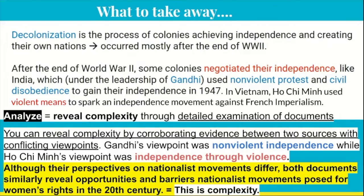If you find opportunities and barriers in Document 1 and opportunities and barriers in Document 2, you've revealed complexity. You can go deeper by corroborating evidence between two sources with conflicting viewpoints. For example: Gandhi's viewpoint was non-violent independence while Ho Chi Minh's was independence through violence - they conflict. Yet although their perspectives on nationalist movements differ, both documents similarly reveal opportunities and barriers nationalist movements posed for women's rights in the 20th century. That is complexity.